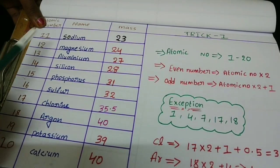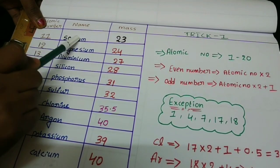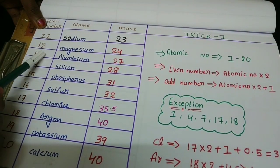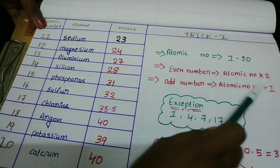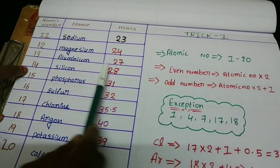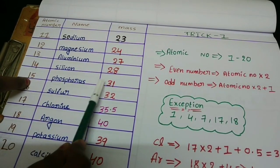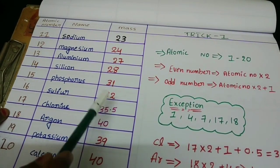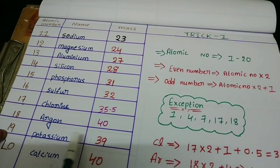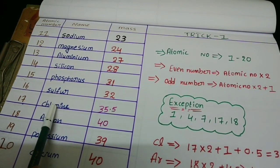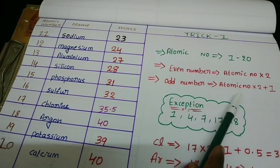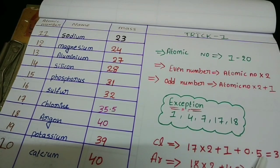Now let's do the odd numbers for 11 to 20. For sodium (11): 11 × 2 = 22, 22 + 1 = 23. 23 is the sodium atomic mass. For aluminium (13): 13 × 2 = 26, 26 + 1 = 27. 27 is the aluminium atomic mass. For phosphorus (15): 15 × 2 = 30, 30 + 1 = 31. 31 is the phosphorus atomic mass. Chlorine (17) is an exception — it does not give a whole number. Following the odd trick gives 35 + 0.5, so 35.5 is the chlorine atomic mass. For potassium (19): 19 × 2 = 38, 38 + 1 = 39. 39 is the potassium atomic mass.